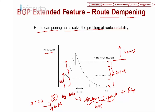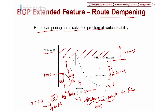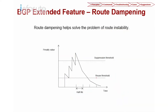After the half-life period — which is user-defined in minutes — your penalty reduces by half. For example, with a 10-minute half-life, a penalty of 1000 reduces to 500. If you flap again, 1000 is added making it 1500. If you flap several times and hit the suppressed region, your route becomes inactive until time passes and no more flapping occurs, making it reusable again. This is route dampening.